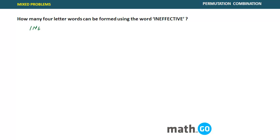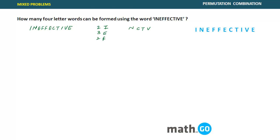Let's write out the word 'ineffective'. The first step is to figure out how many letters are repeated. There are two I's, three E's, two F's, and the remaining four letters — N, C, T, V — appear only once.